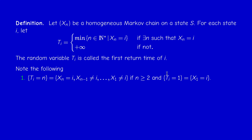What is the event T_i equals n? If T_i equals n and n is greater or equal to 2, it means that X_1 is different from i, X_2 is different from i, ..., X_{n-1} is different from i, and X_n equals i.